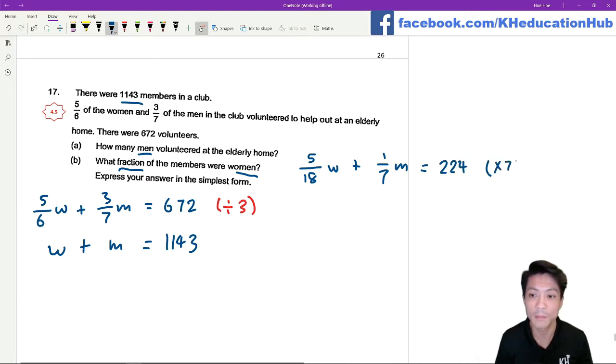Next I'm going to multiply it by 7. 5 over 18 times 7 will give me 35 over 18.